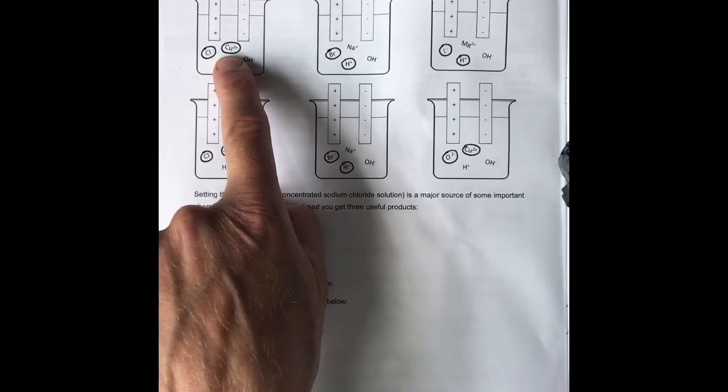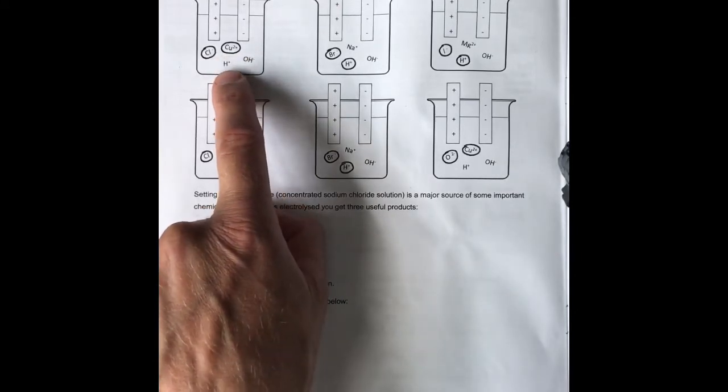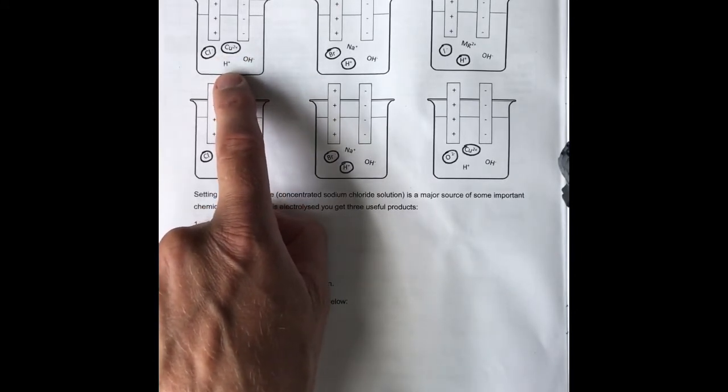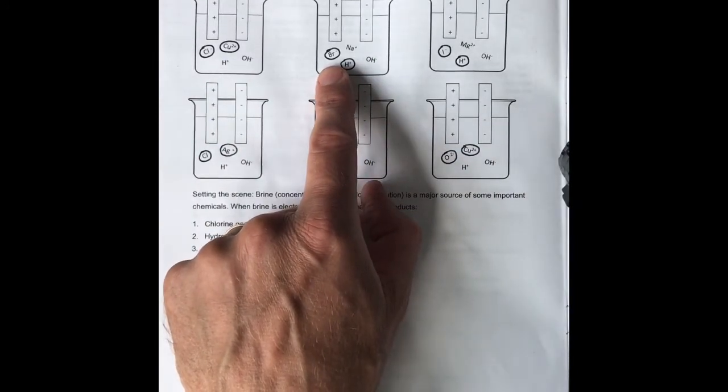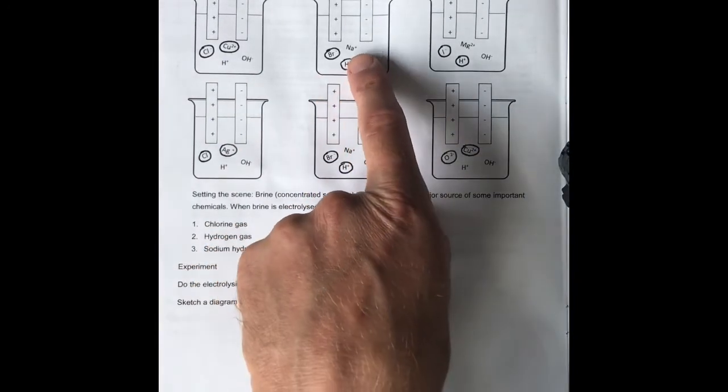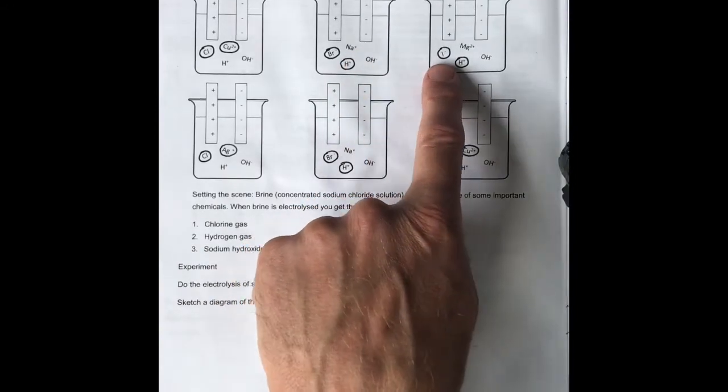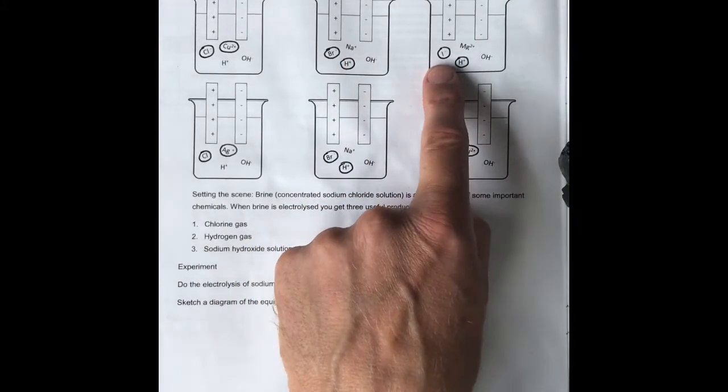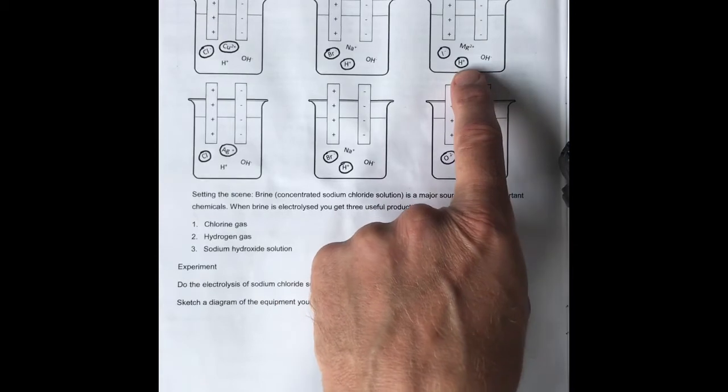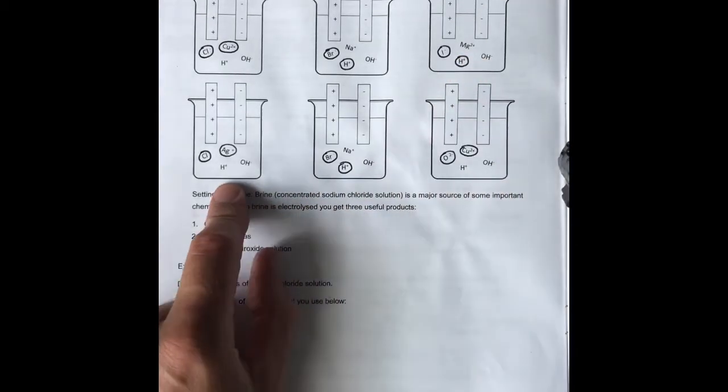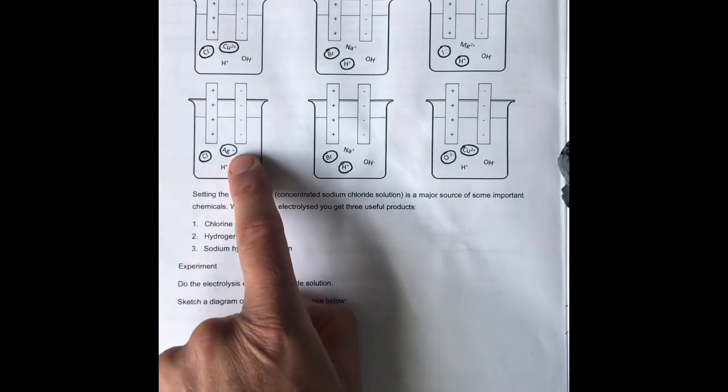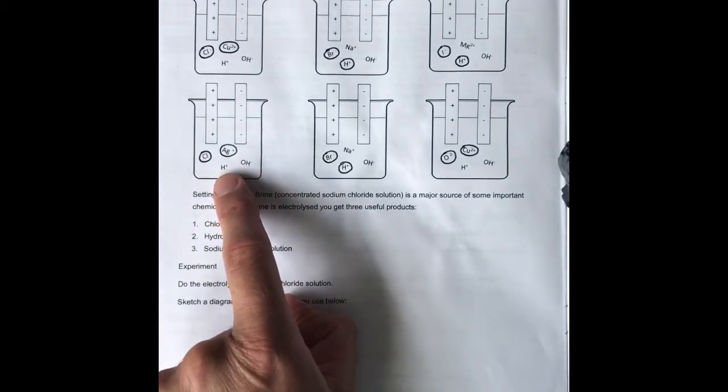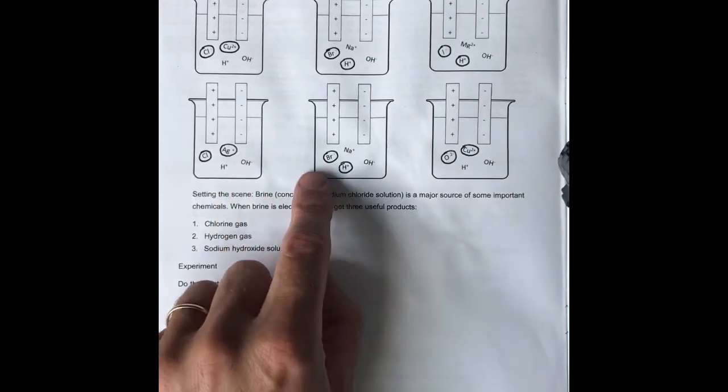Hydrogen is less reactive than sodium. Iodine is another halogen given off first, and hydrogen is less reactive than magnesium. Chlorine, the halogen, is given off. Silver is given off here because it is less reactive than hydrogen.